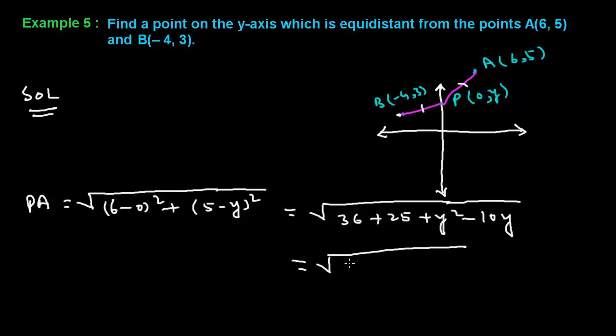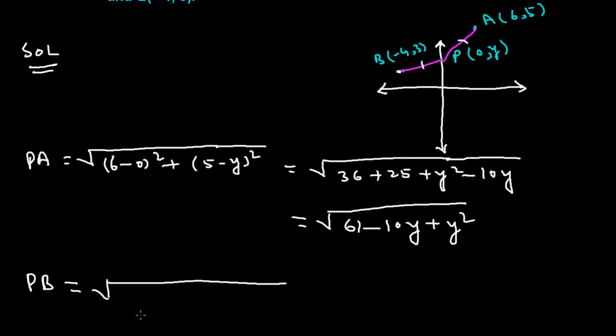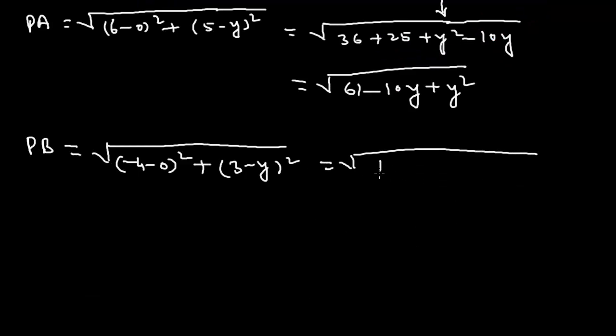Now we shall find the distance between P and B. Then it will be (-4 - 0)² + (3 - y)². If we further solve it, then it will be 16 + 9 - 6y + y². It will be √(25 - 6y + y²).